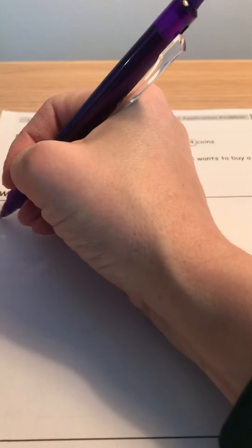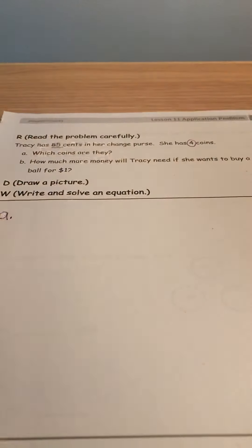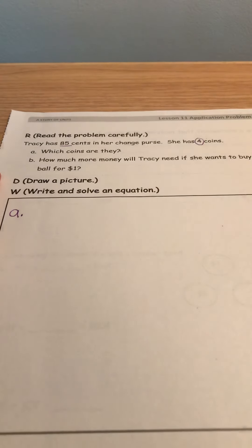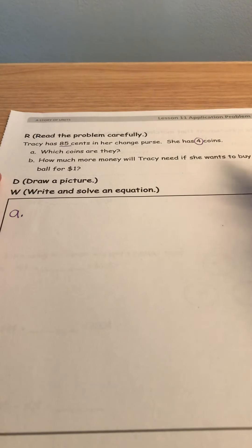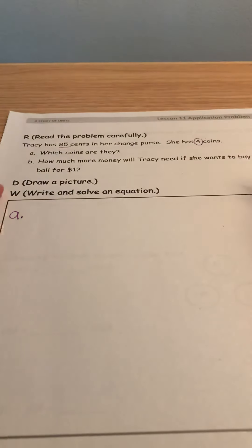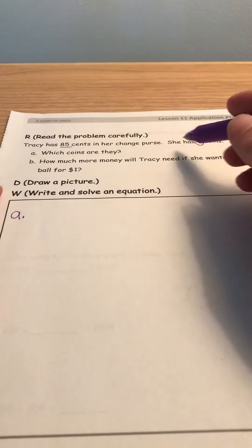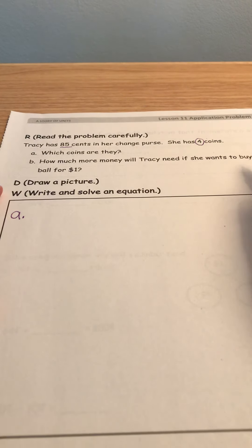So let's start with writing a letter A because we're only answering the part A of the question. Okay. Says to draw a picture. Well, let's try this, okay?